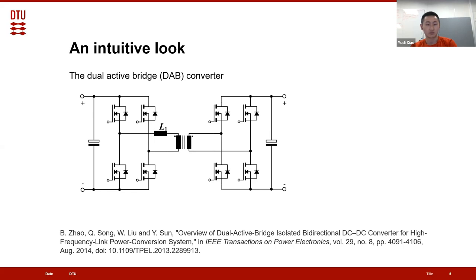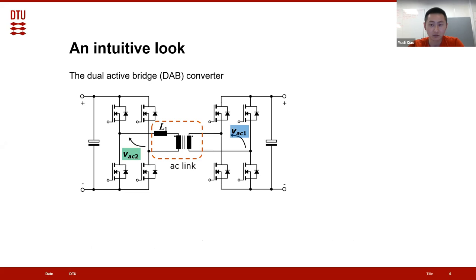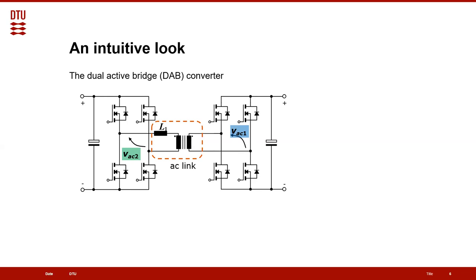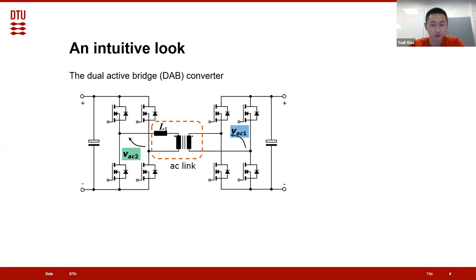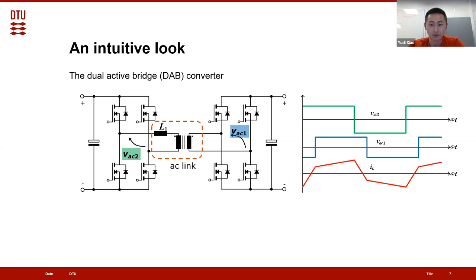The topology is very simple — it has two full bridges, one connected to the input and the other connected to the output. By modulating these two full bridges, it can generate two AC voltages across the switching nodes vac1 and vac2. We cannot put two AC voltage sources in parallel directly, so we need something in between: a buffer composed of an inductor and a transformer. Because of this inductor there will be a phase difference between the voltage and the current.